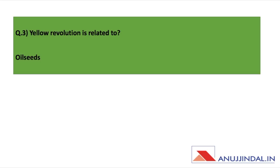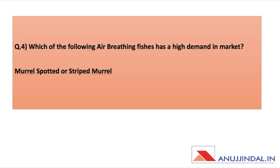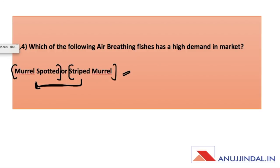The next question is on the yellow revolution, which I already discussed in the ARD question series. The answer is oilseeds. Next, which of the following air-breathing fishes has high demand in the market? There is confusion between two options — Murals Potted and Stride Mural — and as of now these are doubtful. Questions were asked from almost all ARD sections, including fisheries.